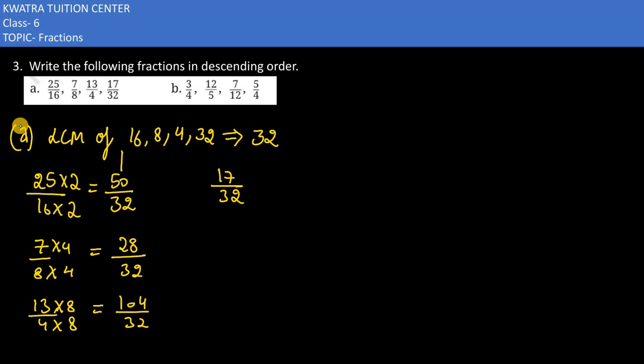अब इन numbers को हमें क्या करना है? Arrange करना है in descending order. So how would you arrange it? The biggest number out of this is 104 divided by 32. And put a sign here. Sign क्या होगा हमारा? Greater than का. Then I would have 50 by 32. Again the greater than sign would be there. उसके बाद हमारे पास क्या आजाएगा? 28 by 32. Then I would have 17 by 32 in the end.